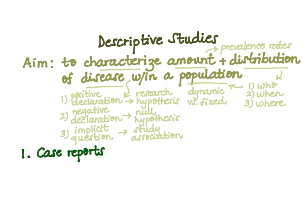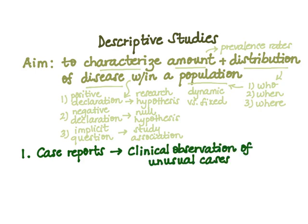There are three different study designs in descriptive epidemiology. Number one: case reports, which are the simplest category. These are defined as detailed accounts of cases of disease among individuals, with clinical observations of unusual cases. An example would be a single occurrence of methylene chloride poisoning — an unusual case for which we can write a report observing the clinical progression of the disease.